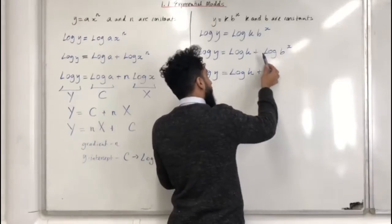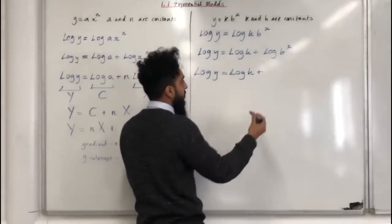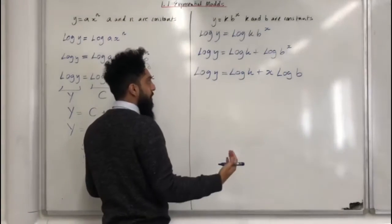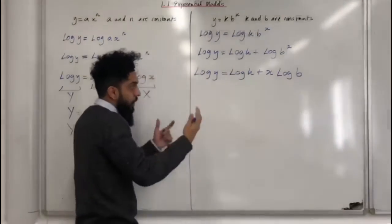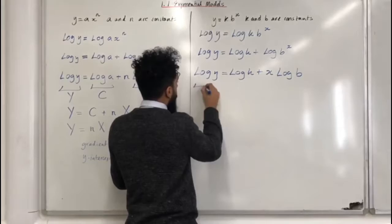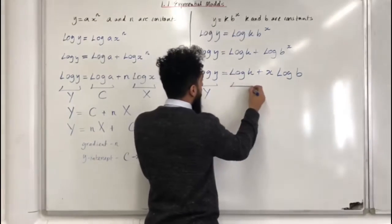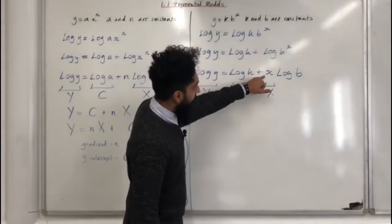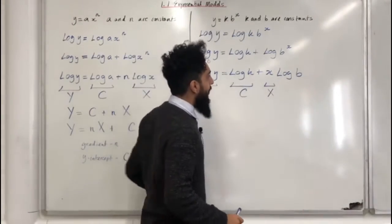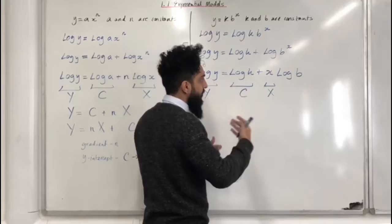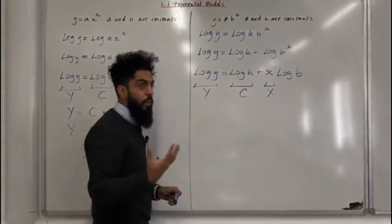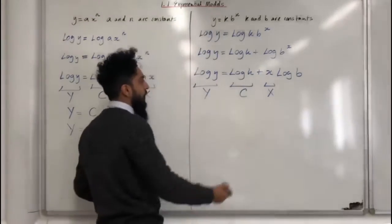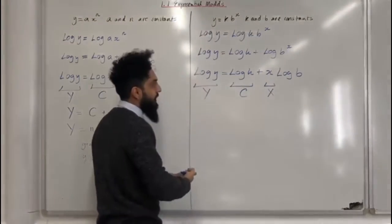I can bring down the power x in front of the log using the power rule for logs, so I can write x log b. Now I'm going to use a change of variables to rewrite this equation so that it looks like an equation of a straight line. I can call log y capital Y, log k capital C, and lowercase x capital X. Why is lowercase x capital X and not log b? Because x is a variable — it's changing. Log b is a constant, because in the question you are told that b is a constant. So your capital X needs to be the lowercase x, which is our variable — something that's changing.